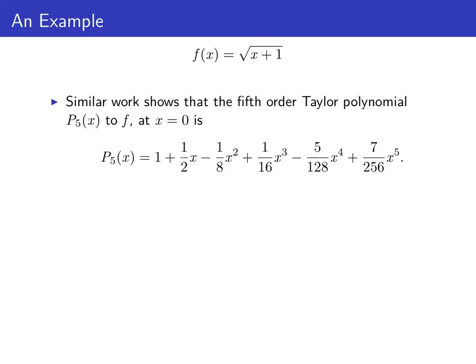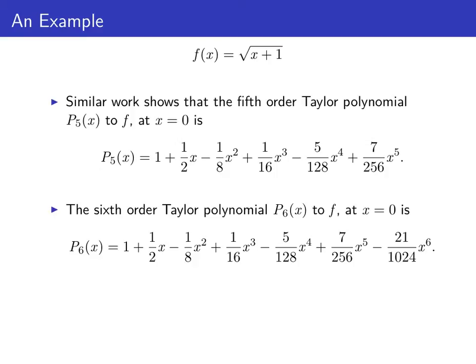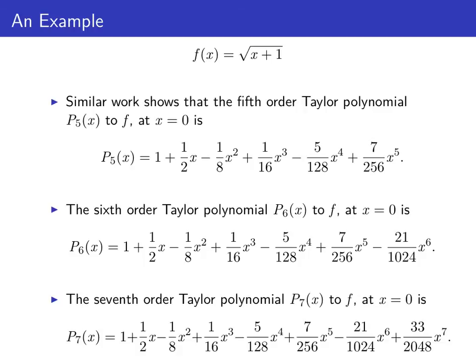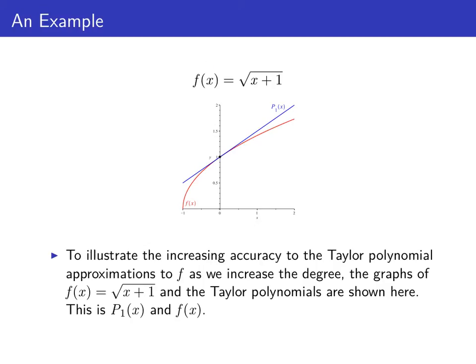We could keep going and find the fifth order Taylor polynomial for f at zero, the sixth order Taylor polynomial for f, and the seventh order Taylor polynomial p₇(x) for f at x = 0. It would be worth your while to verify these formulas for the fifth, sixth, and seventh order Taylor polynomials. To illustrate the increasing accuracy, we show the graphs successively: f against p₁, p₂, p₃, p₄, p₅, p₆, and p₇. As we increase the order, the polynomials fit the graph of f better and better for more values of x around x = 0.